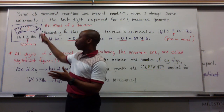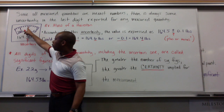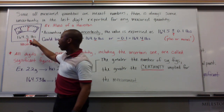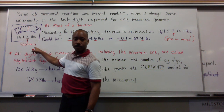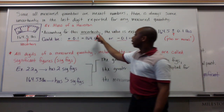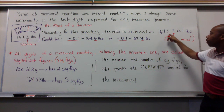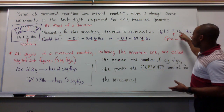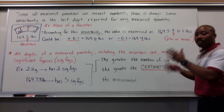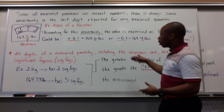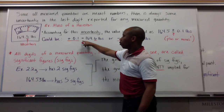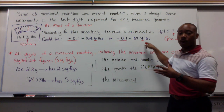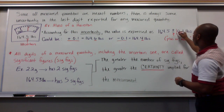Because to say I'm simply 164 pounds is not accurate. Clearly, it's in between the 4 and the 5 of this 160 category. So I have to approximate that I'm 164.5 pounds. That last digit — that 5 — is uncertain. And when we account for that uncertainty, the value is expressed as 164.5 plus or minus 0.1 pounds. That means this number could possibly be 0.1 pounds higher or 0.1 pounds lower.